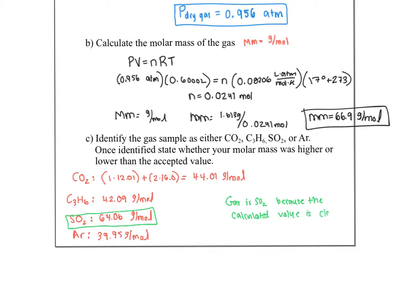The calculated molar mass is closest to SO₂. It also asks whether our calculated molar mass is higher or lower — our calculated molar mass is higher than the actual molar mass of SO₂.